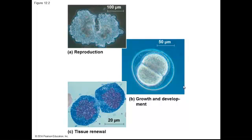Here are some diagrams or pictures of cell division. This would be a single-celled amoeba dividing into two amoeba. This is a fertilized egg developing during development after fertilization, and this is one cell dividing into more cells inside of a human body.